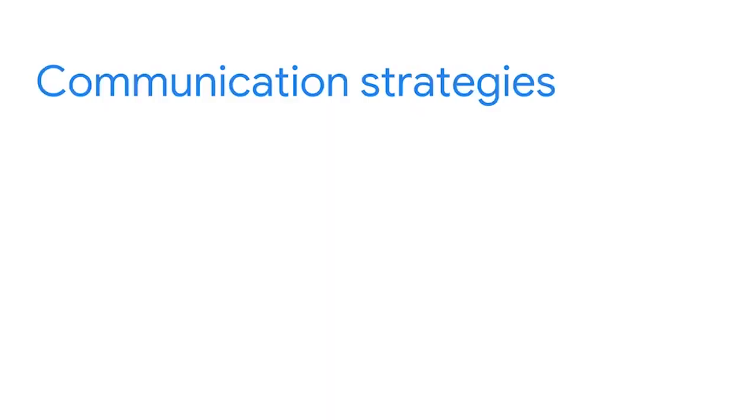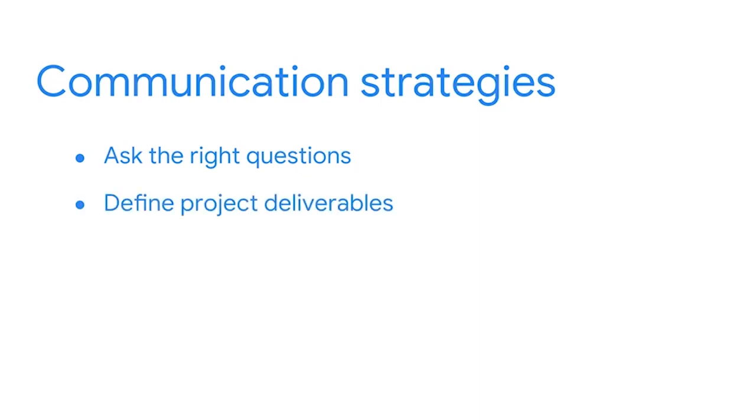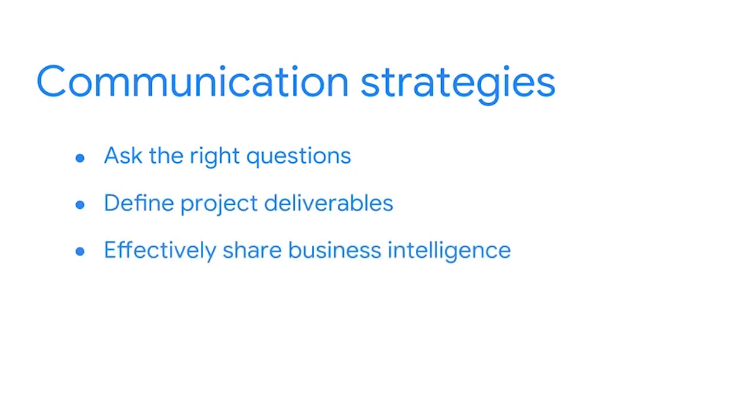Recently, we've been exploring key elements of the business intelligence process. We spent some time getting to know typical BI stakeholders, including the project sponsor, systems analyst, developer, and general business stakeholders. Now we're going to take that a step further and consider some important communication strategies that BI professionals use when collaborating with these people. These strategies involve knowing how to ask the right questions, define project deliverables, and effectively share the business intelligence you discover.